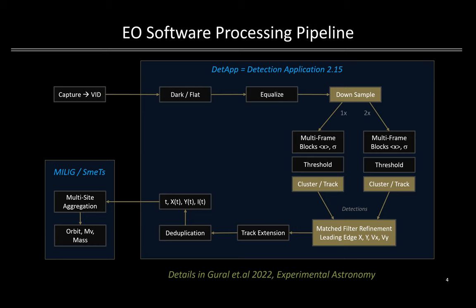Further details can be found in a recently published paper in Experimental Astronomy, with the reference given in the last page of this briefing. The significant software innovations include the use of a unique down sampling technique to shrink the effective length of high apparent angle rate meteors so the cluster detector can work more reliably, and the application of match filtering for refined position measurements.